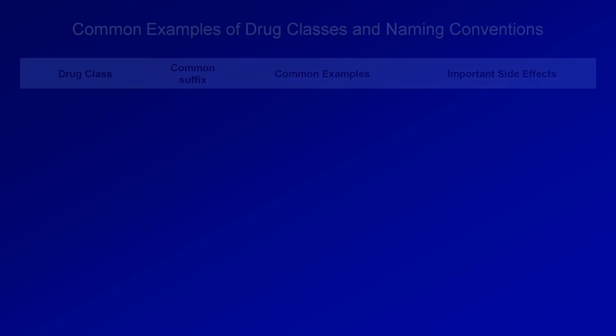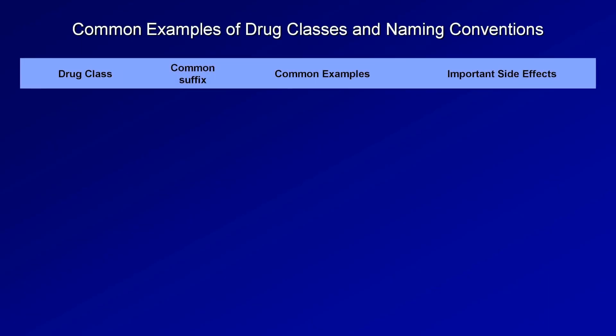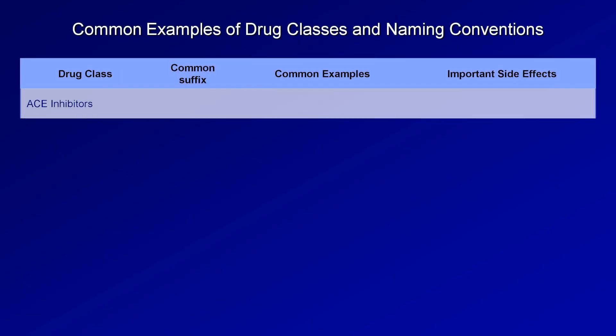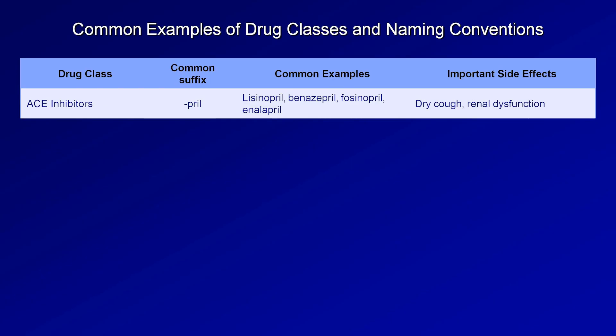If you count the three subclasses of diuretics separately, that gives us 13 different classes of medications to remember, which can be difficult when first starting out in medicine. Luckily, there are naming conventions that help identify drug class. ACE inhibitors always end in -pril. Common examples include lisinopril, benazepril, fosinopril, and enalapril. Important side effects of ACE inhibitors are a dry cough and renal dysfunction.